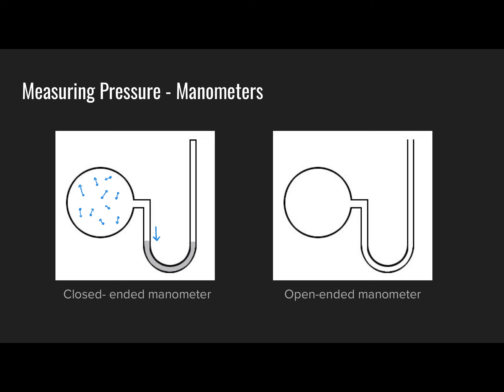On the opposite side of the closed-end manometer's u-tube there is a vacuum — no particles present whatsoever. By definition, a vacuum exerts zero pressure because there are no collisions. So we have gas molecules pushing downwards on the left side of the mercury column, and nothing pushing downwards on the right side. As a result, the mercury rises up the right side of the u-tube. We simply measure the height that column rises — the pressure of the gas in the bulb is proportional to that height, giving us a measurement in millimeters of mercury.